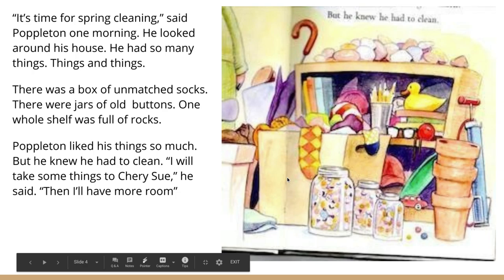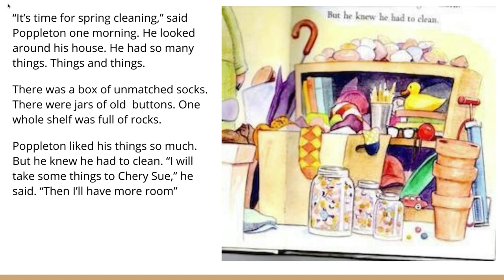It's time for spring cleaning, said Poppleton one morning. He looked around his house. He had so many things — things and things. There was a box of unmatched socks. There were jars of old buttons. One whole shelf was full of rocks. Poppleton liked his things so much, but he knew he had to clean. "I'll take some things to Cherry Sue," he said. "Then I'll have more room."